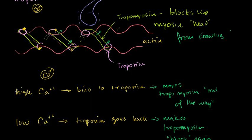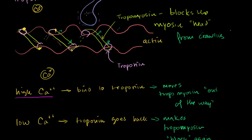From the last video, if we have a high calcium ion concentration inside of the muscle cell, those calcium ions will bond to the troponin proteins, which will then change their shape such that the tropomyosin will be moved out of the way. The myosin heads can then crawl along the actin filaments, and we'll have muscle contraction. So high calcium ion concentration means contraction.